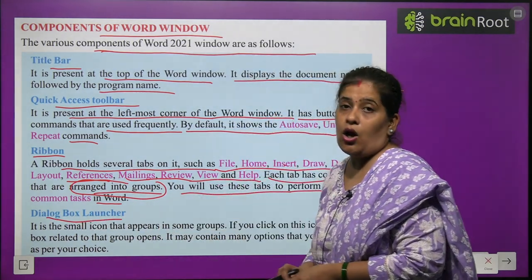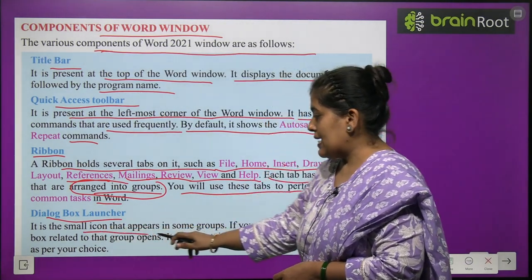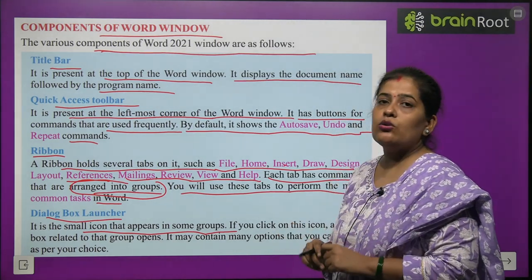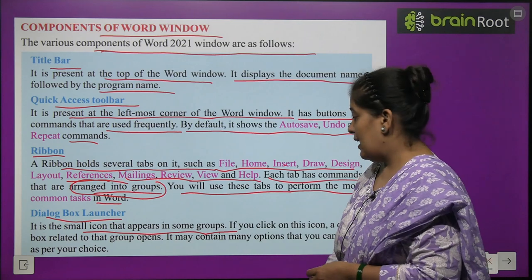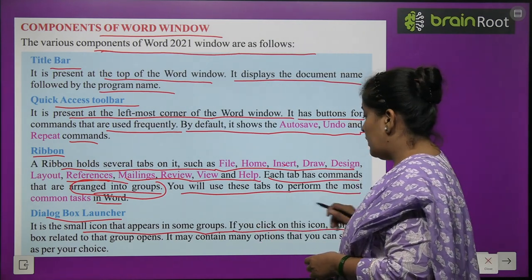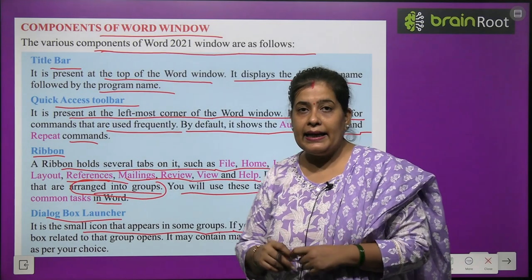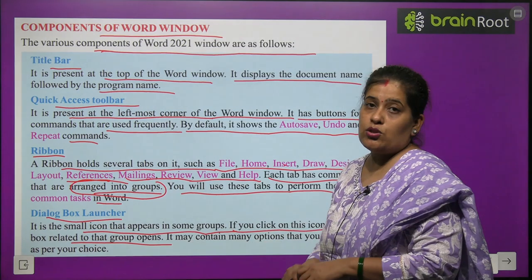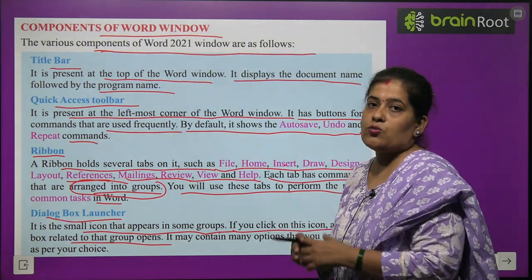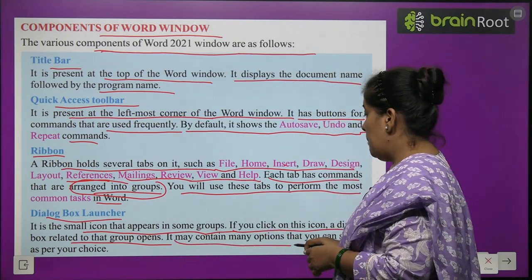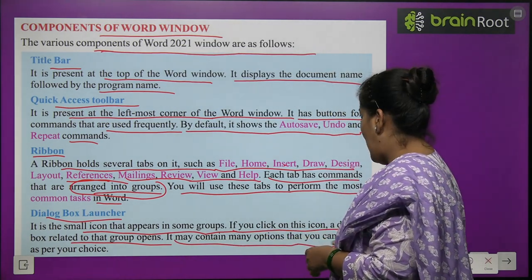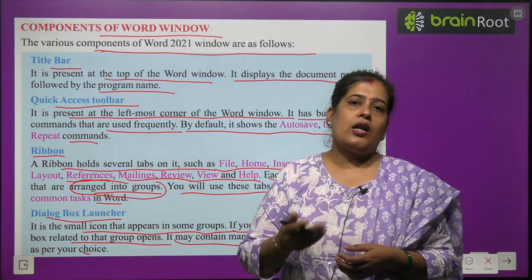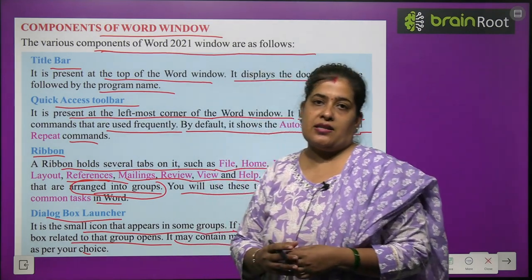Dialogue Box Launcher — it is a small icon that appears in some groups. When you click on this icon, a dialogue box related to that group opens. It may contain many options that you can select as per your choice.